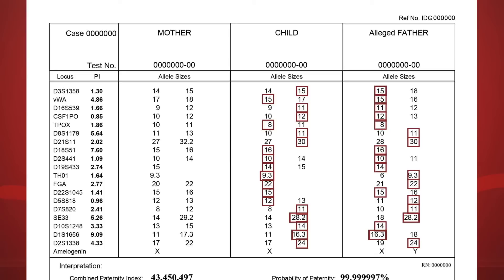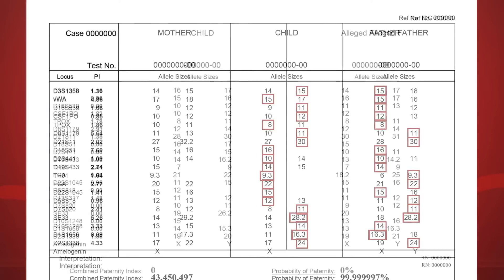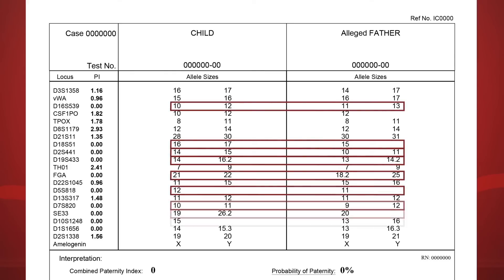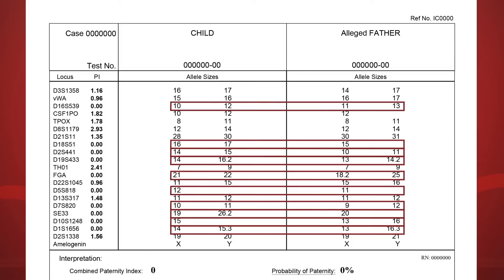You can see there is a match at every single locus. This is true except in rare cases where a genetic mutation exists. When there are mismatches at most locations, then the result will be an exclusion, meaning the man tested is not considered the biological father. Sometimes you might see only one allele instead of two at a single location. This is nothing to worry about — it simply means the two alleles, one from the mother and one from the possible father, are the same length.